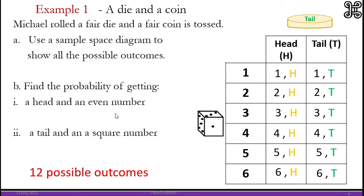So getting a head and an even number, there are 3 options out of 12. So it's 3 over 12.